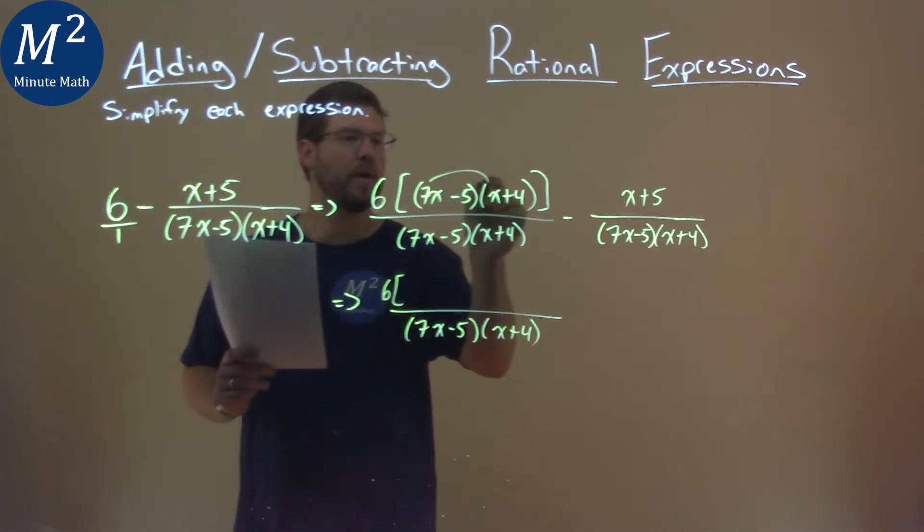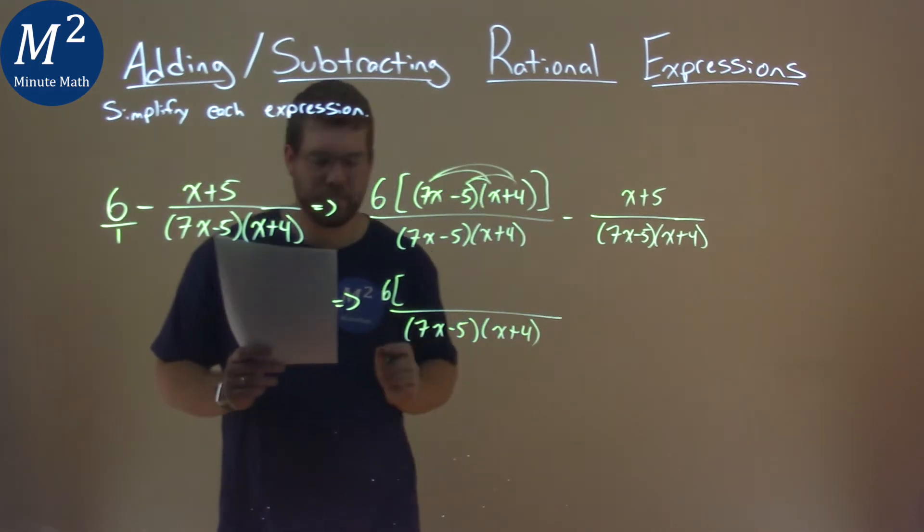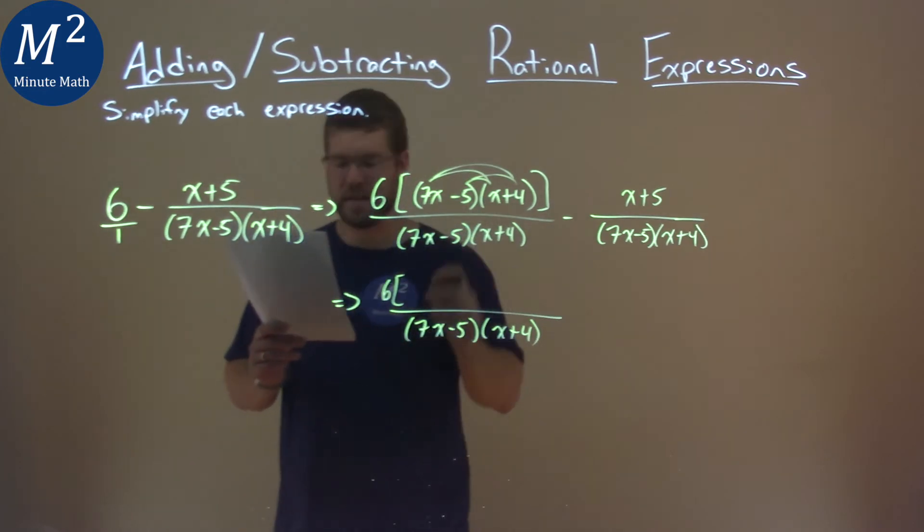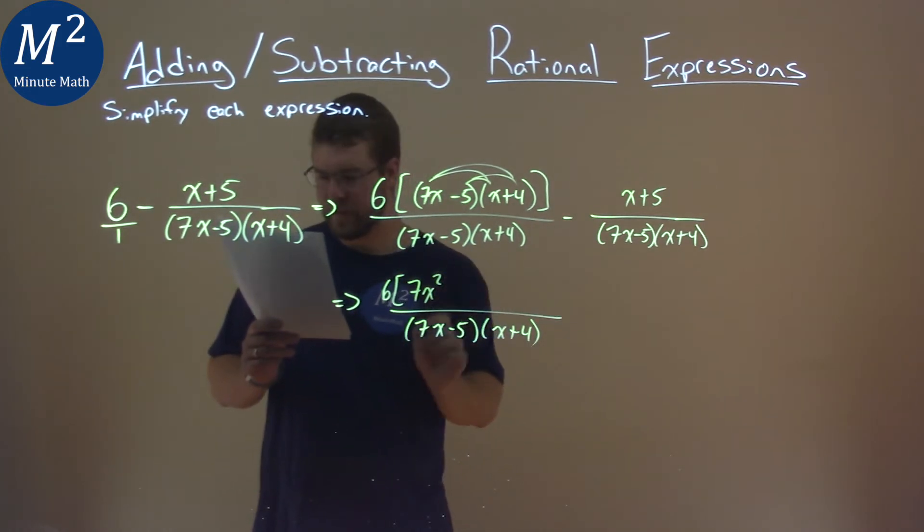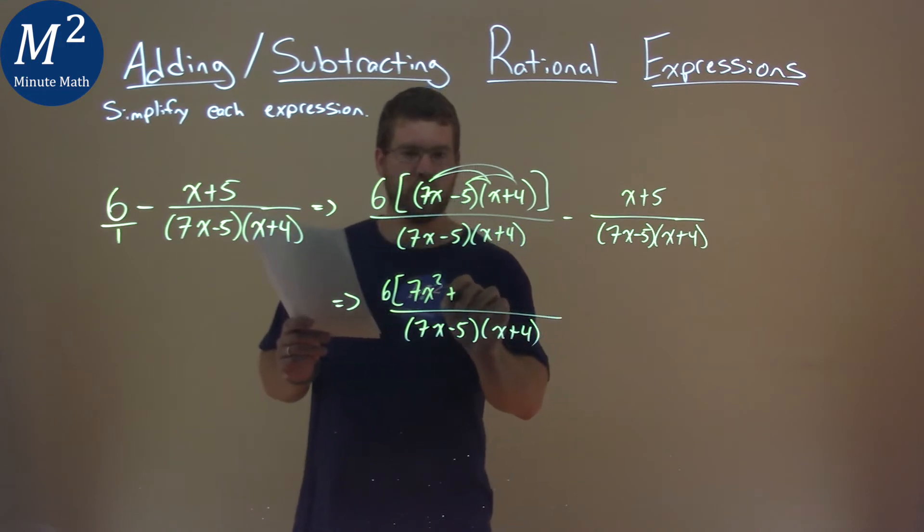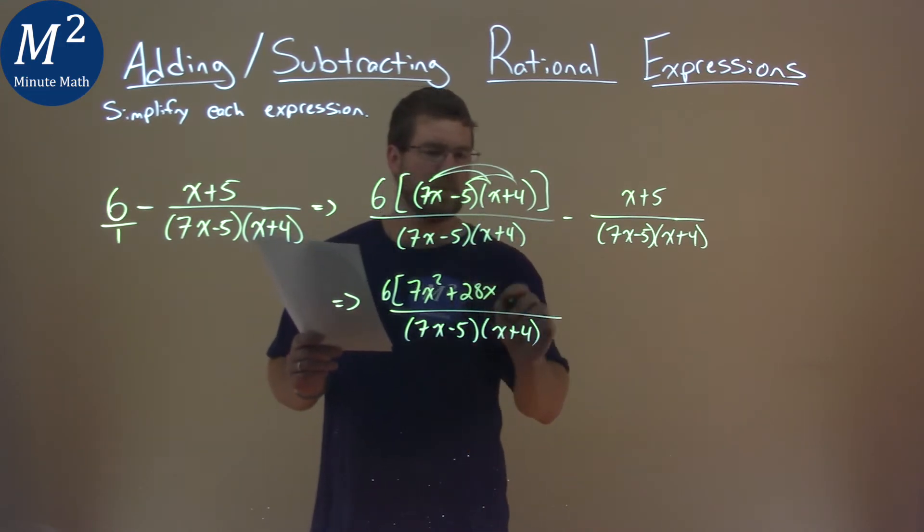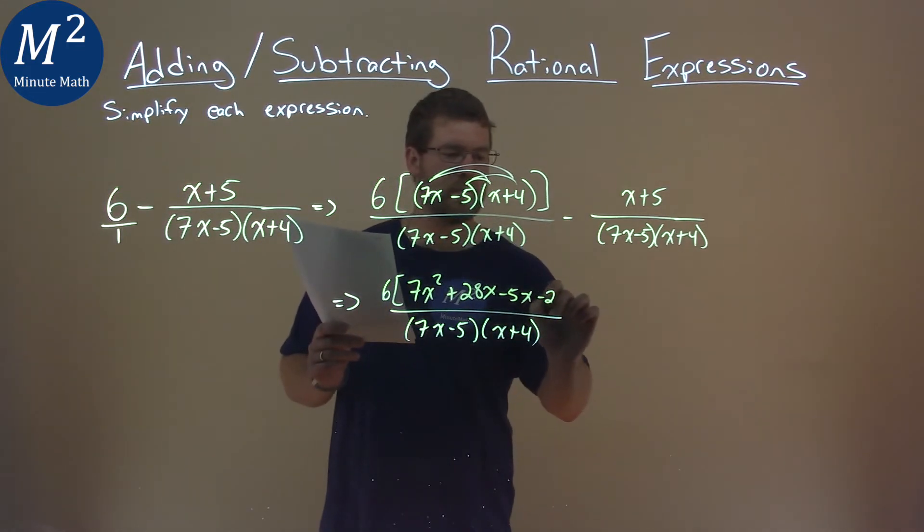Let's multiply all this out. 7x times x is 7x squared, then 7x times 4 is 28x, negative 5 times x is negative 5x, and negative 5 times 4 is 20, so negative 20 here.